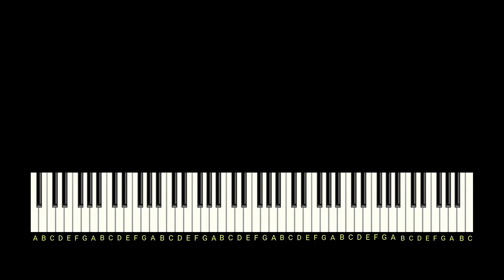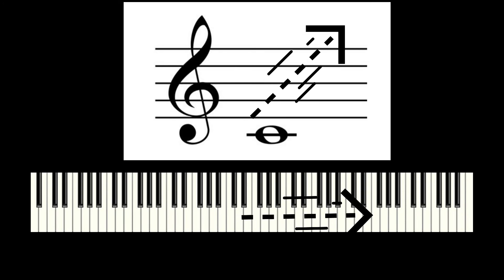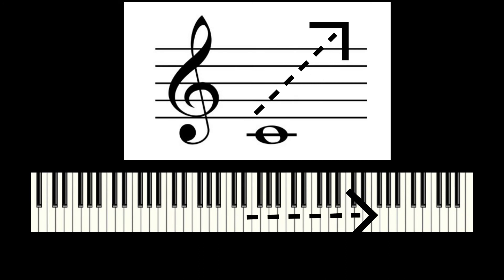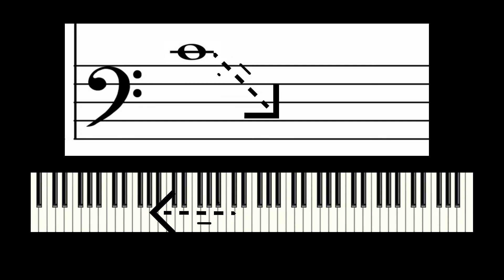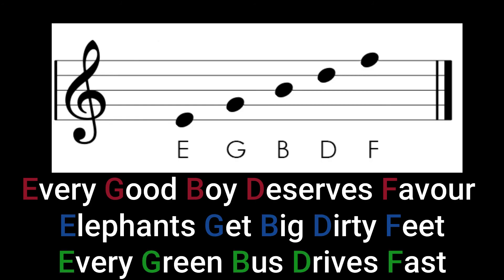Usually notes above or higher than middle C appear in a treble clef, shown here, and notes below middle C are usually shown in a bass clef, which is shown here. We're going to look at the white notes on a treble clef.